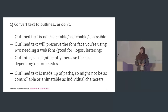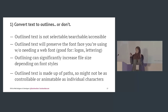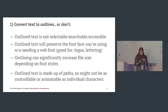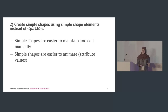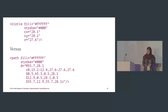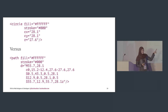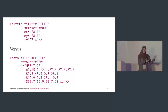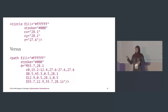Outline text is made of paths, so it may not be as controllable or animatable as individual characters. Similarly, create simple shapes using simple shape elements instead of paths. Simple shapes are easier to maintain and animate using attribute values. For example, a circle has fill, stroke, cx, cy, and r attributes. If you create the same circle using a path, you get path data gibberish, and changing position or radius requires transformations on top of transformations.